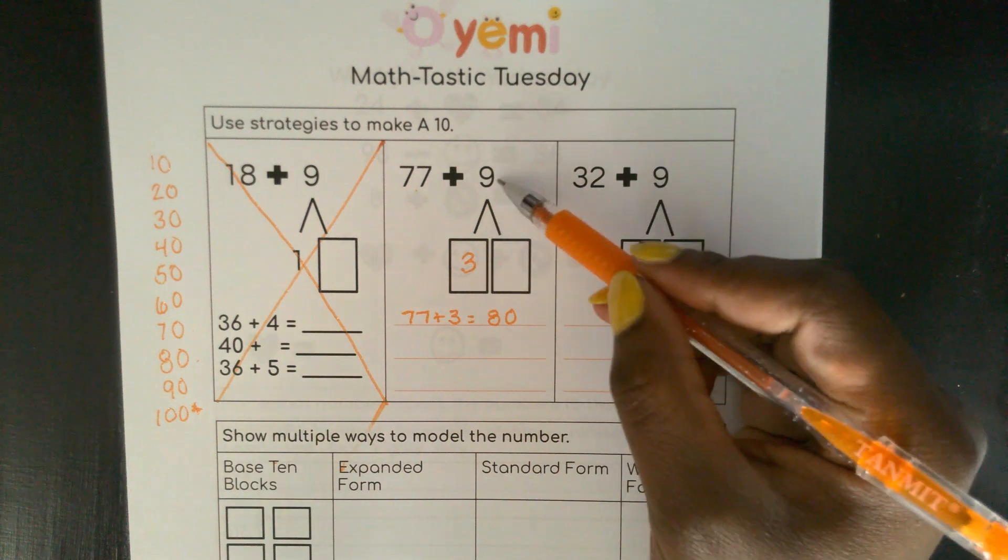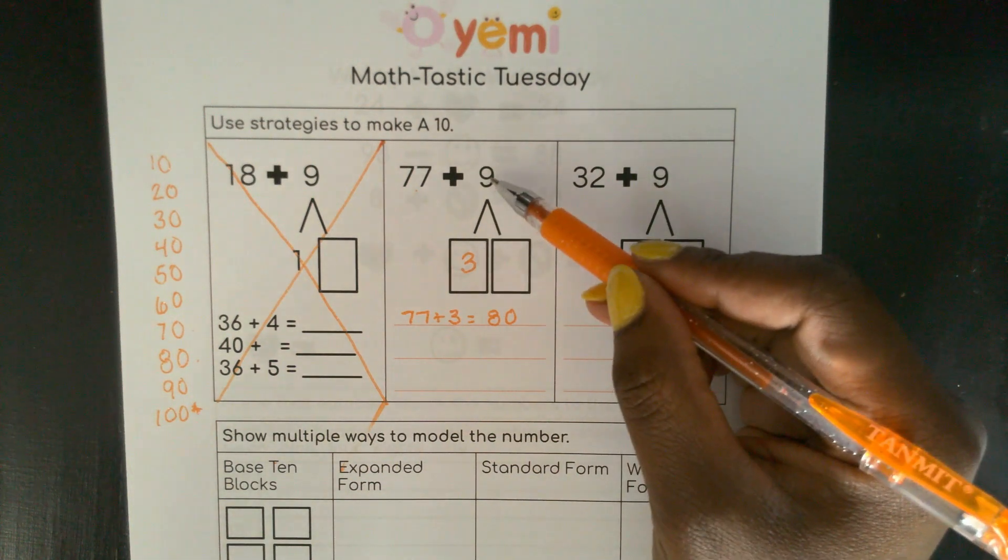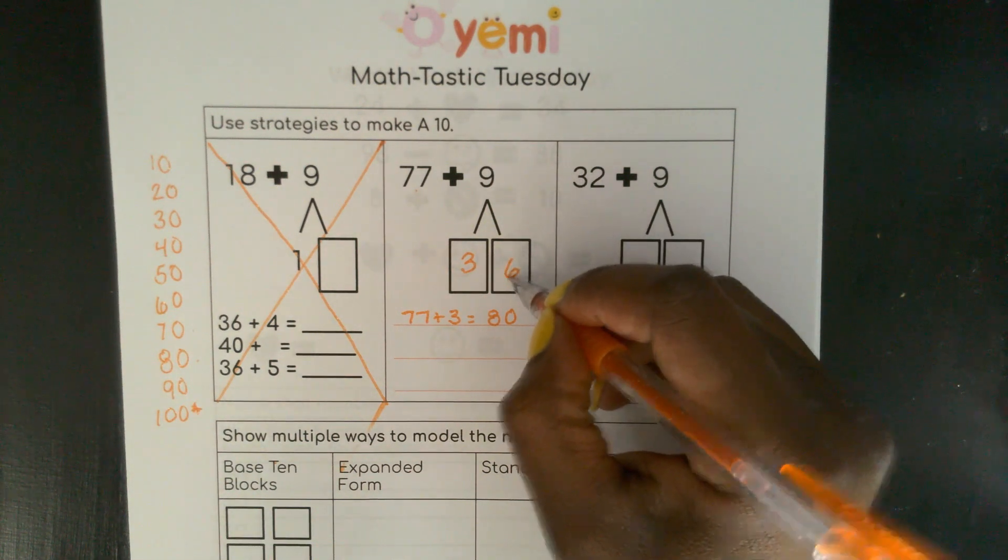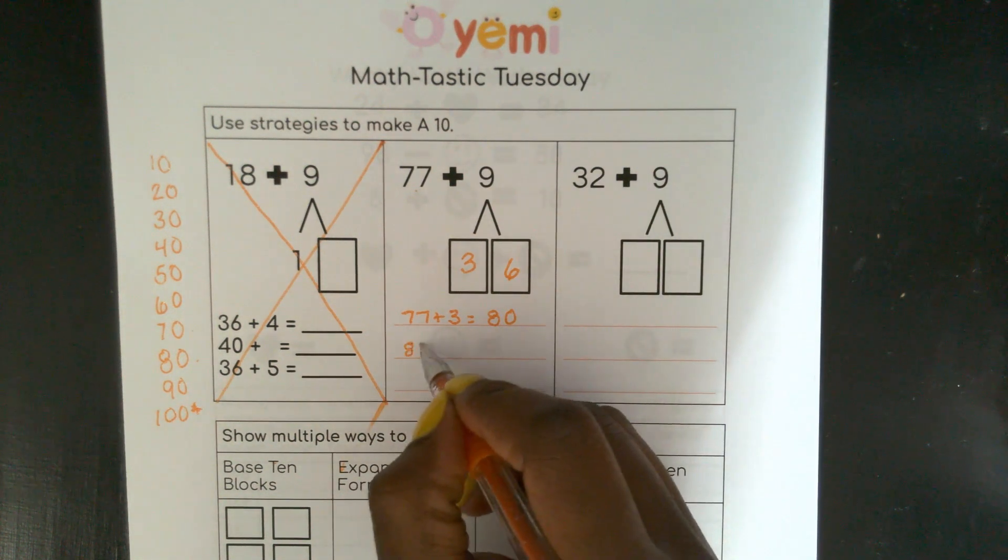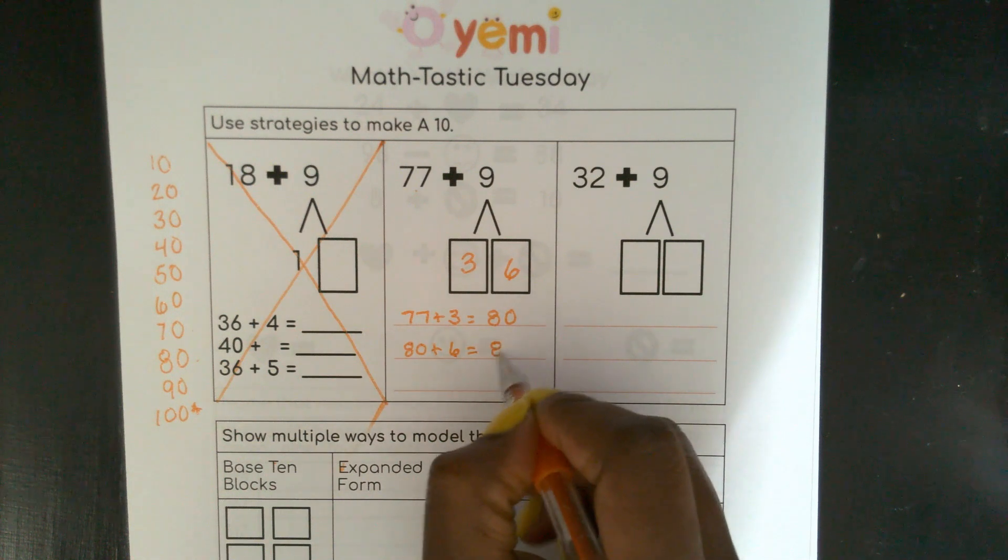How much more do I need to make 9? 3 plus what will give me 9? 6. 80 plus 6. So here, 80 plus 6 equals 86.